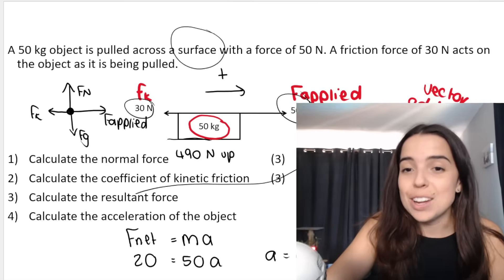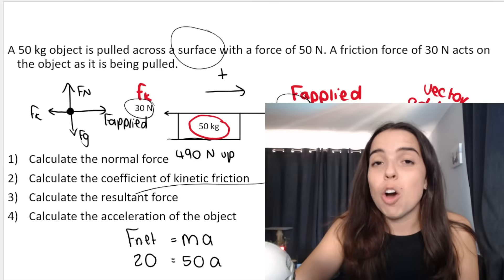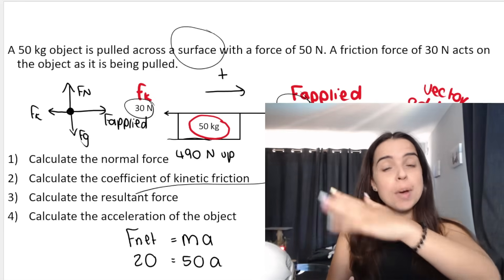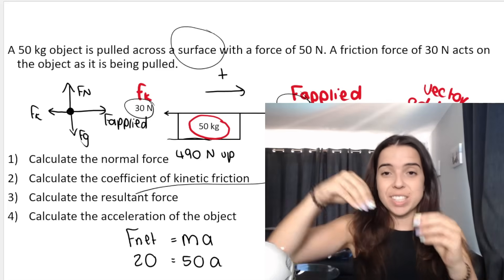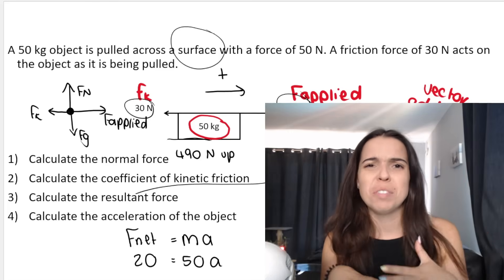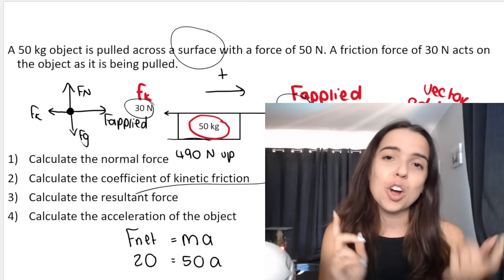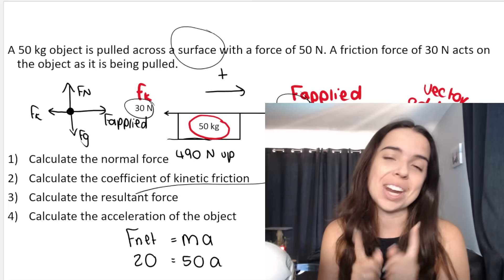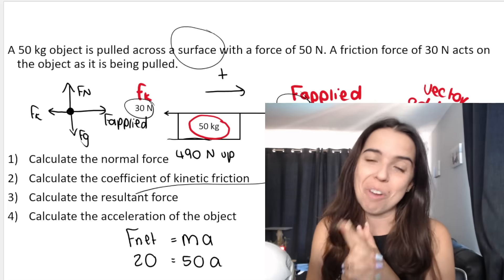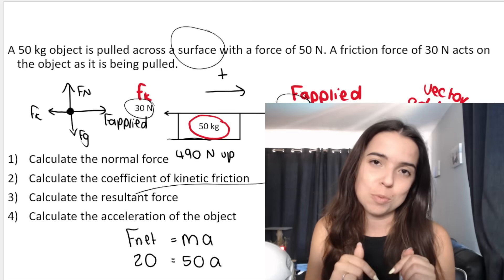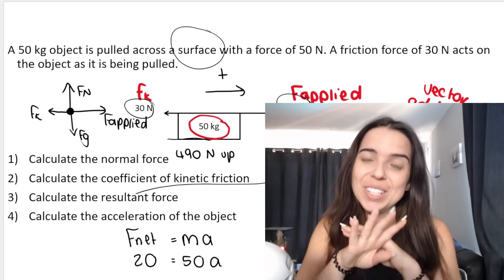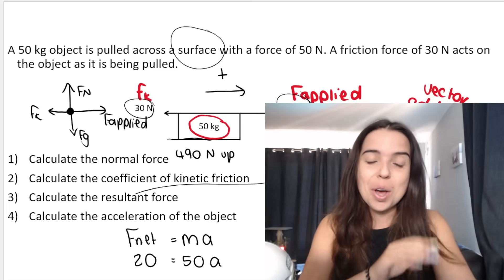And that's how easy Newton's second law can be. Of course, there are a lot more complicated questions — like when you have a slope, a force acting at an angle, two objects connected, or simultaneous equations. I hope you stick around and subscribe for more physics videos. Check out the link in my description box below for more Newton's questions. I'll see you in the next video. Bye everybody.